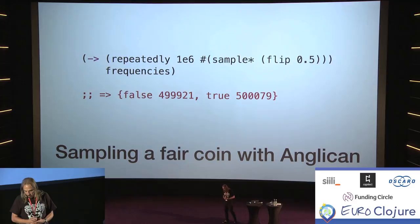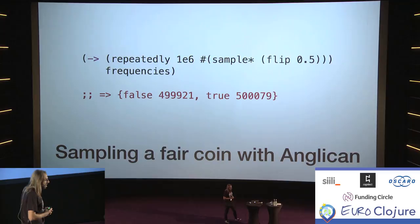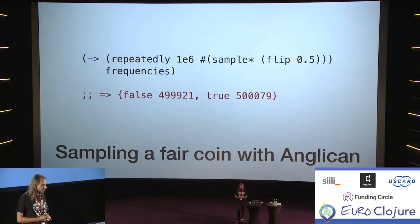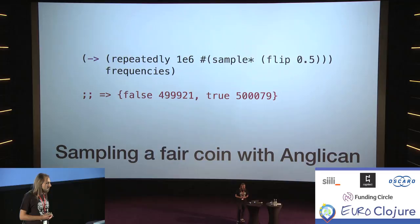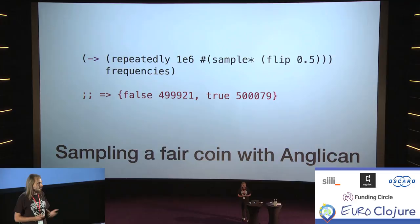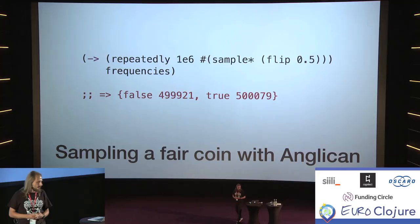Here's the first example — the probabilistic hello world: a coin toss. What's shown is some code to sample a fair coin. We start with the flip function: flip(0.5) returns a data structure representing a distribution that returns true in 50% of cases and false in the other 50%, corresponding to heads and tails. We can draw samples from that — here doing it one million times and then counting them. As you can see, that seems to be pretty fair.